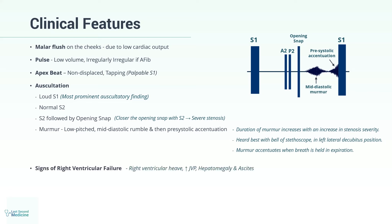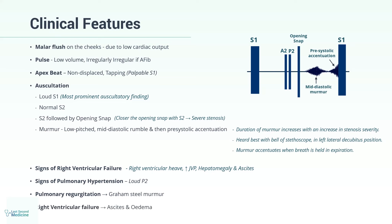With long-standing disease, you may find signs of right ventricular failure, including right ventricular heave, jugular venous distension, hepatomegaly and ascites, and signs of pulmonary hypertension such as a loud pulmonary component of the second heart sound. Graham-Steele murmur can occur due to pulmonary regurgitation. If right ventricular failure occurs, ascites and edema can also be seen.